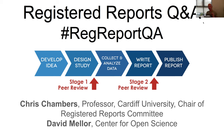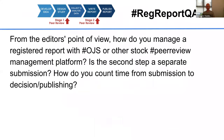If you have a question during the webinar, jump in and ask it. David's going to be watching the chat bar so we can catch those questions as they come up. So to our first question, which is from a journal editor who is thinking of implementing registered reports. From the editor's point of view, how do you manage a registered report with OJS — the open journal system, which is an open source peer review manuscript handling system — or other stock peer review management platforms?